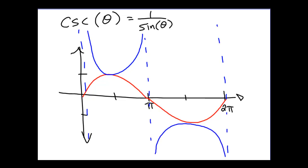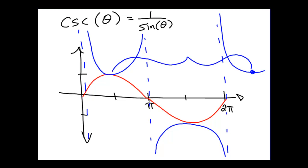We can see the behavior right away by applying the same reasoning used in the previous graph. Note that cosecant has asymptotes at every integer number of π, and the period is 2π. This function will repeat itself, with a distance of 2π between repetitions. So we have a period of 2π.